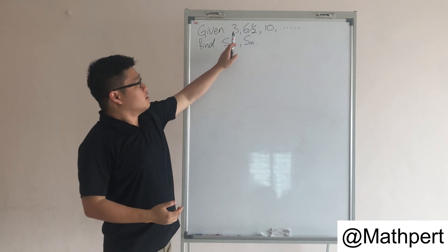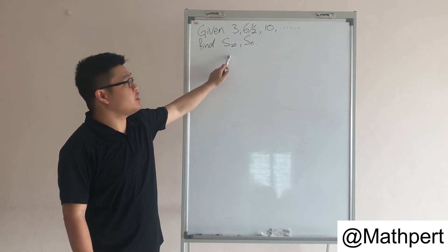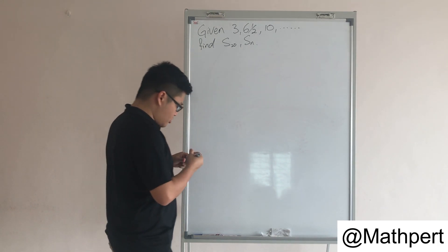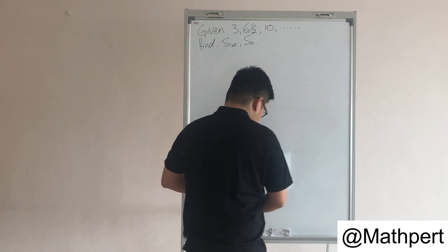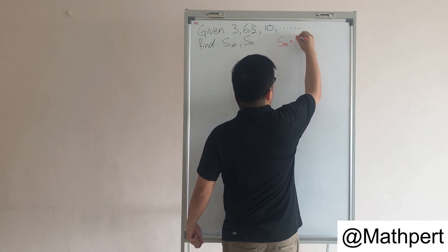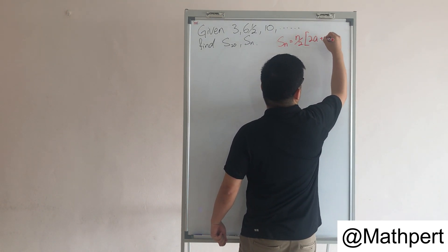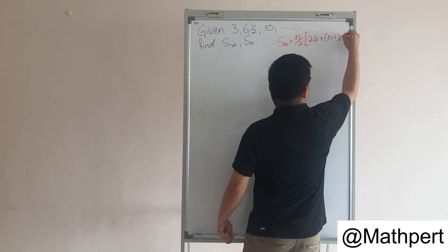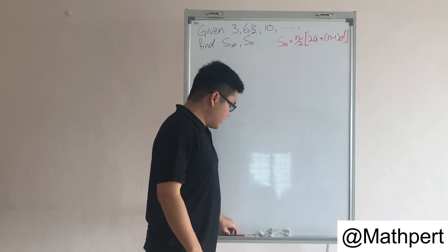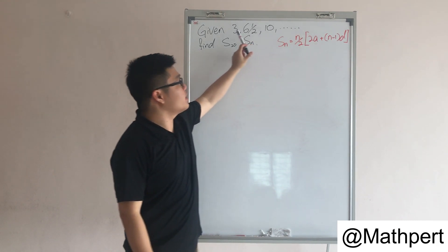Okay, given by the progressions — these are the arithmetic progressions — and we are asked to find the sum of the first n terms and the sum of the first 20 terms. Let me write down the formula: Sn equals n over 2 multiplied by 2a plus n minus 1 times d. First, let us determine a. The first term, from here, is 3.